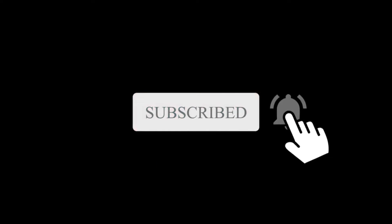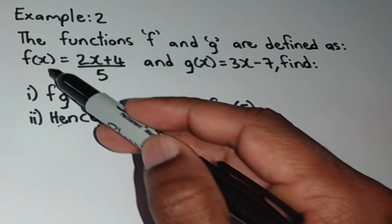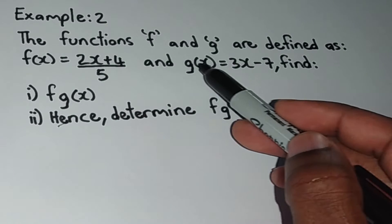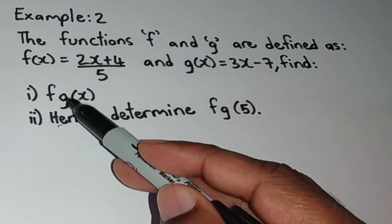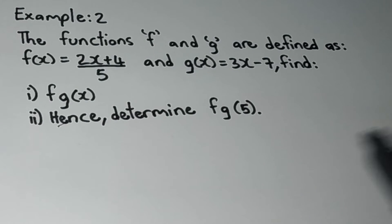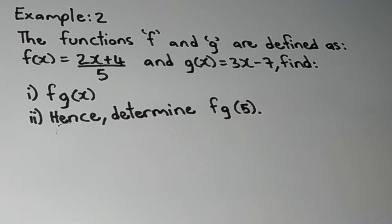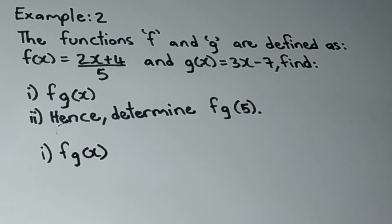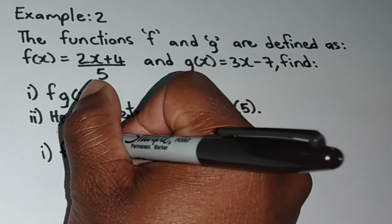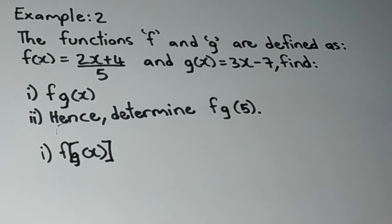Now let us look at example 2. The functions f and g are defined as f of x is equal to 2x plus 4 all over 5, and g of x is equal to 3x minus 7. From this, they ask us to find part 1 f of g of x, and part 2 hence determine f of g of 5. Once we see the word 'hence,' we know that part 1 is related to part 2. So here in part 1, just like example 1, finding f of g of x means we substitute the g of x function into the f of x function.